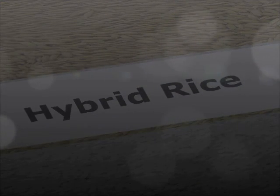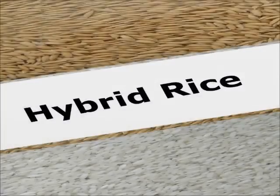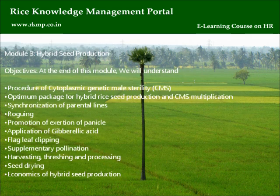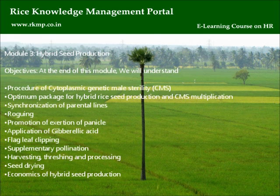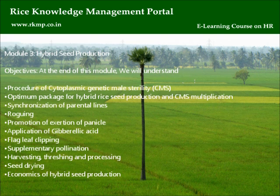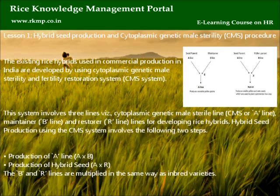Hybrid Rice. Module 3: Hybrid Seed Production. Objectives: At the end of this module, we will understand the procedure of Cytoplasmic Genetic Male Sterility (CMS), optimum package for hybrid rice seed production, and CMS multiplication. Topics include synchronization of parental lines, roguing, promotion of exertion of panicle, application of Gibberellic Acid, flag leaf clipping, supplementary pollination, harvesting, threshing and processing, seed drying, and economics of hybrid seed production.